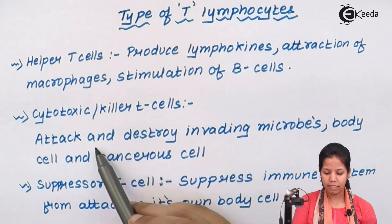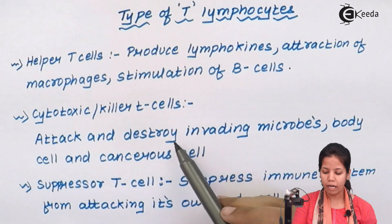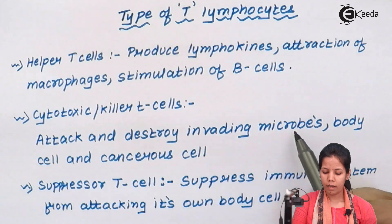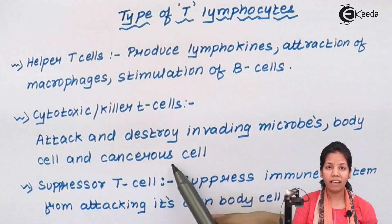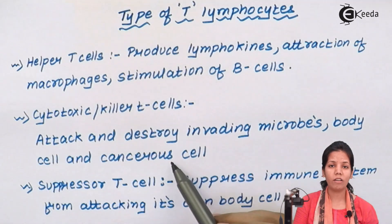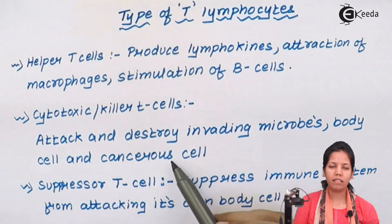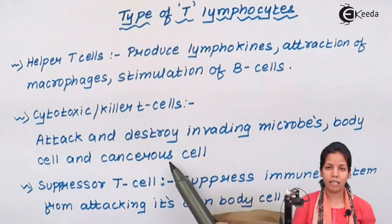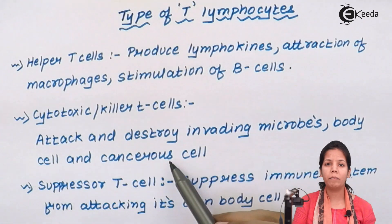Cytotoxic T-cells attack and destroy invading microbes, and during cancer invasion they work at a greater level. One important issue with cytotoxic T-cells is that they cannot distinguish between self and non-self. For example, if there is a cancerous cell in your body and cytotoxic T-cells are activated, they cannot differentiate between whether they are killing the cancerous cell or also destroying your own body cells in the process. That is the main issue with cytotoxic T-cells or TC cells.